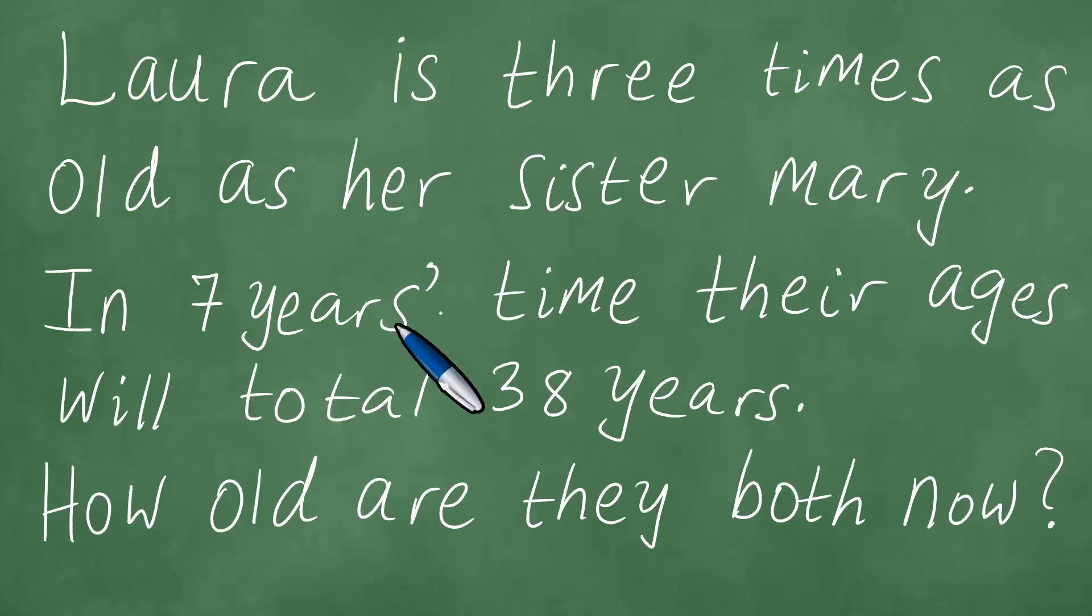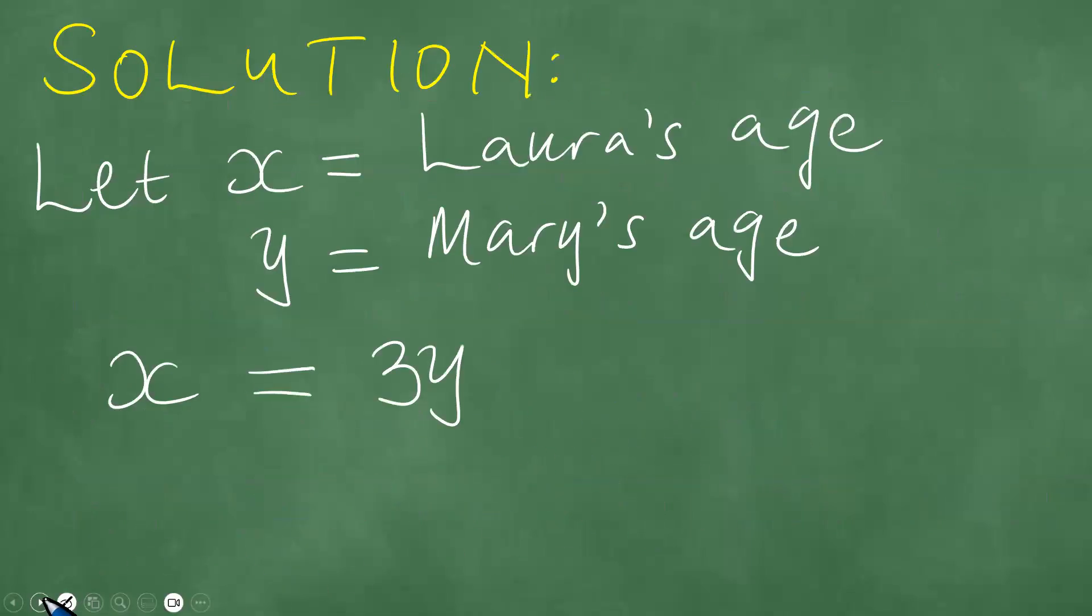Next point. In seven years' time, their ages will total 38 years. So in seven years' time, meaning you have Laura's age in seven years' time, we add seven. And then Mary also, we add seven. Mary's age, we add seven.